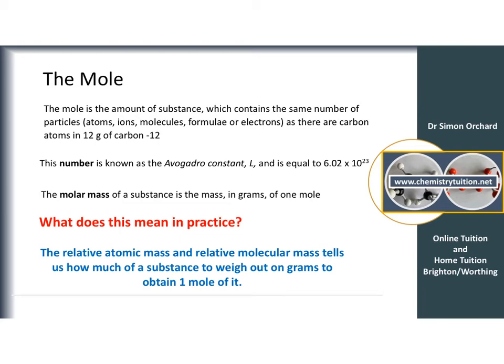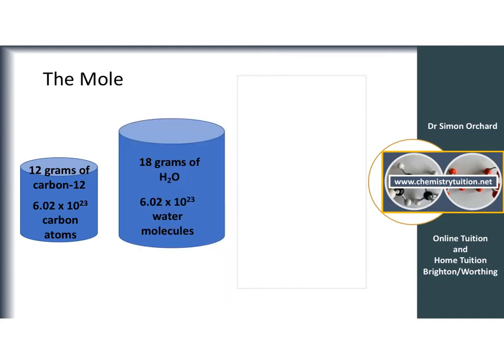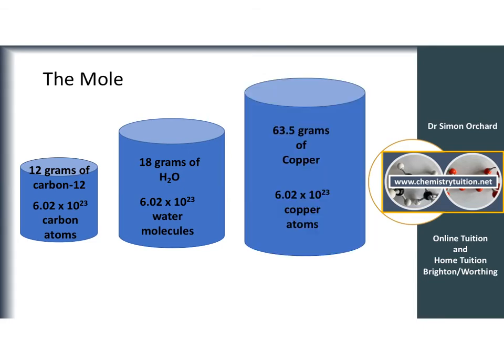If I want one mole of carbon-12, I weigh out 12 grams. I can weigh out the relative atomic mass of any element to get one mole of atoms. For a mole of water molecules (6.02×10²³ molecules), I weigh out 18 grams: 2×1 + 16 = 18. For a mole of copper atoms, the relative atomic mass is 63.5, so I weigh out 63.5 grams to get 6.02×10²³ copper atoms.